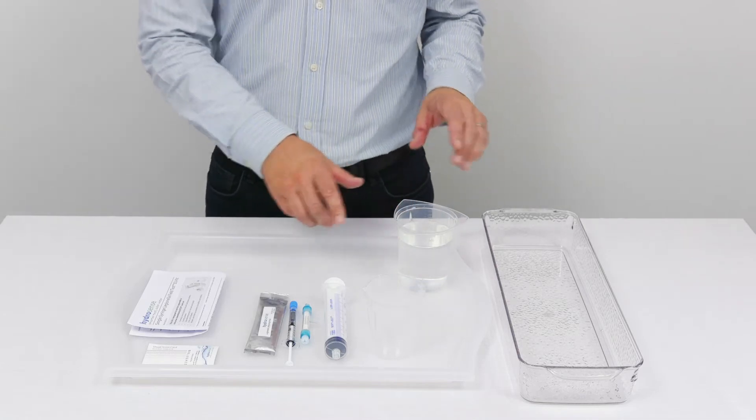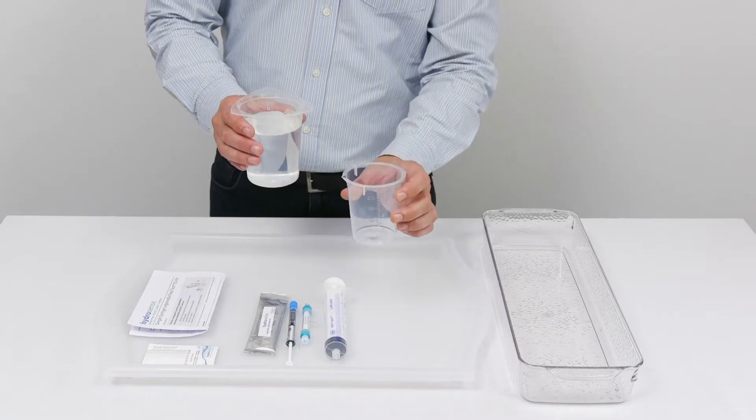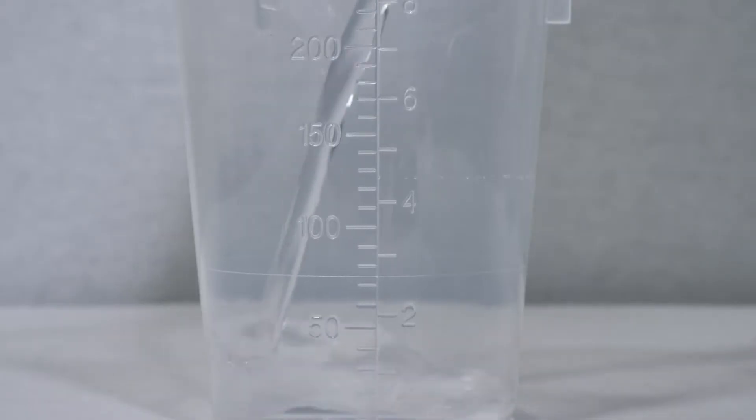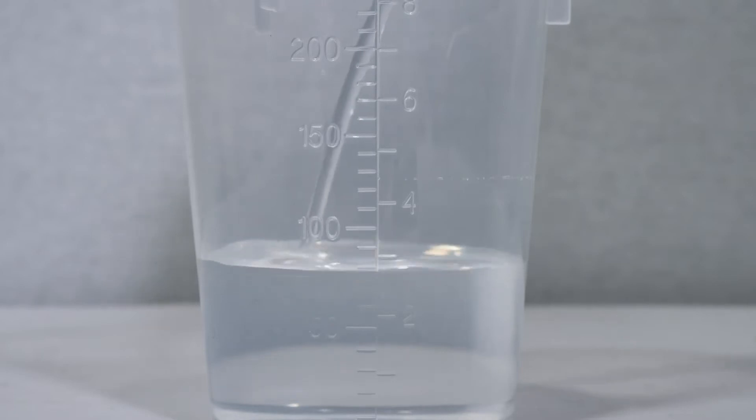I've collected my water sample already, so the first thing you do is take your water sample and pour it into the beaker that's provided with the kit. It's marked up the side of the beaker and you fill it to the 100 milliliter mark.